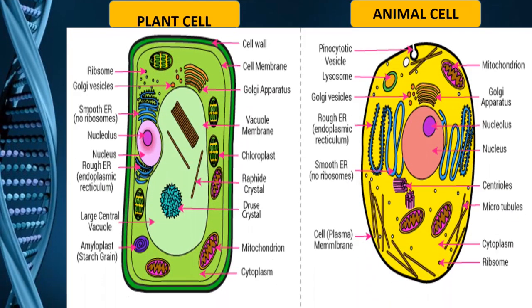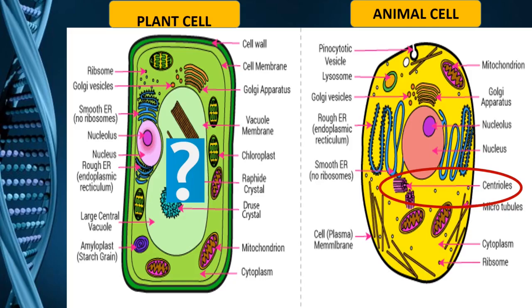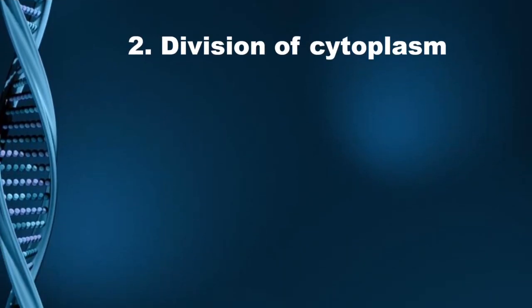This is an image of an animal and a plant cell. As you can see here, in an animal cell the centrioles are present, whereas in a plant cell there are no centrioles. So this is one of the differences between animal and plant cell mitosis — the absence or presence of the centrosome, or centrioles in their divided form.